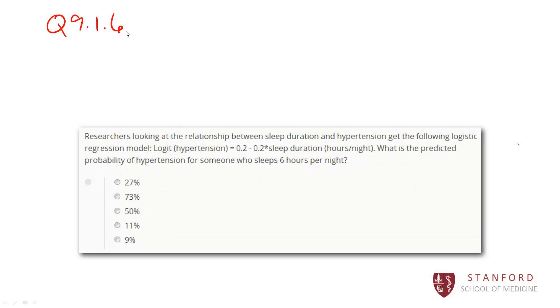So first we have to calculate the predicted logit here. So our predicted logit, again, our intercept is 0.2. We're minus 0.2 times the sleep duration, which here is 6. That's going to give us a predicted logit of negative 1.0. So that's our predicted logit of hypertension, that is the log odds.